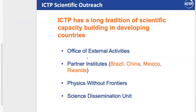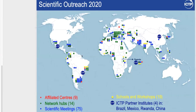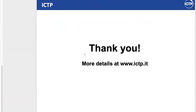In addition, we have the Office of External Activities. If you want to organize a school in your home country, you can ask for some limited funds from them to help support participants. There are also partner institutes in Brazil, China, and Mexico which have recently been founded. Here you can see a map of the different activities and partner institutes, and if you look at the blue and yellow, you can see, for instance, what scientific meetings, schools, and workshops have been organized in different parts of the world.